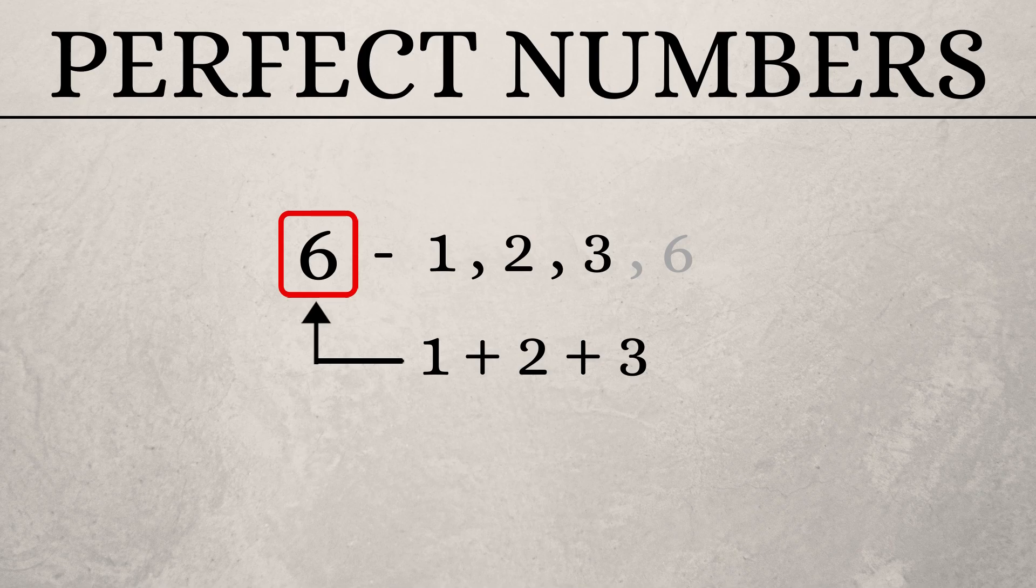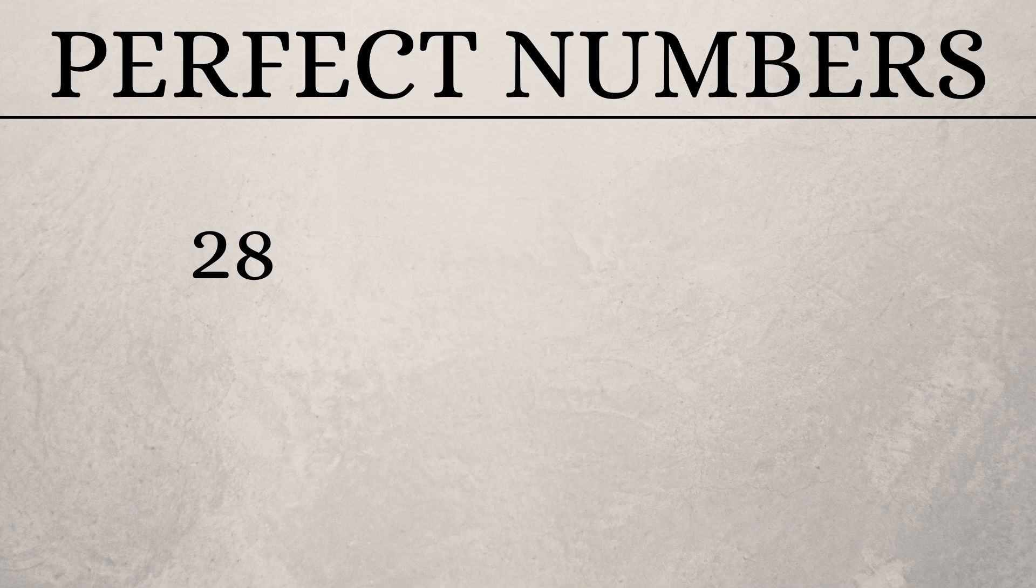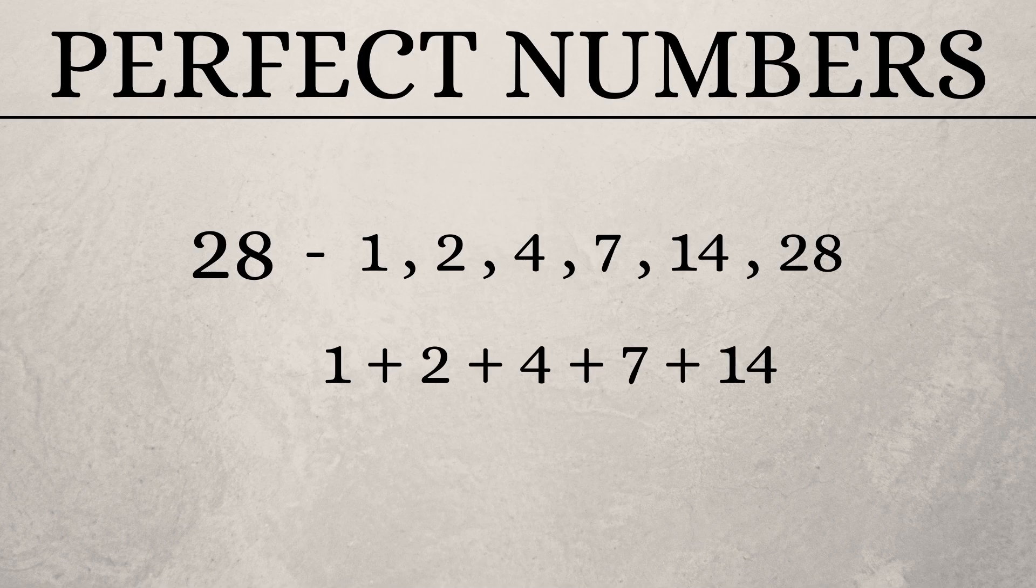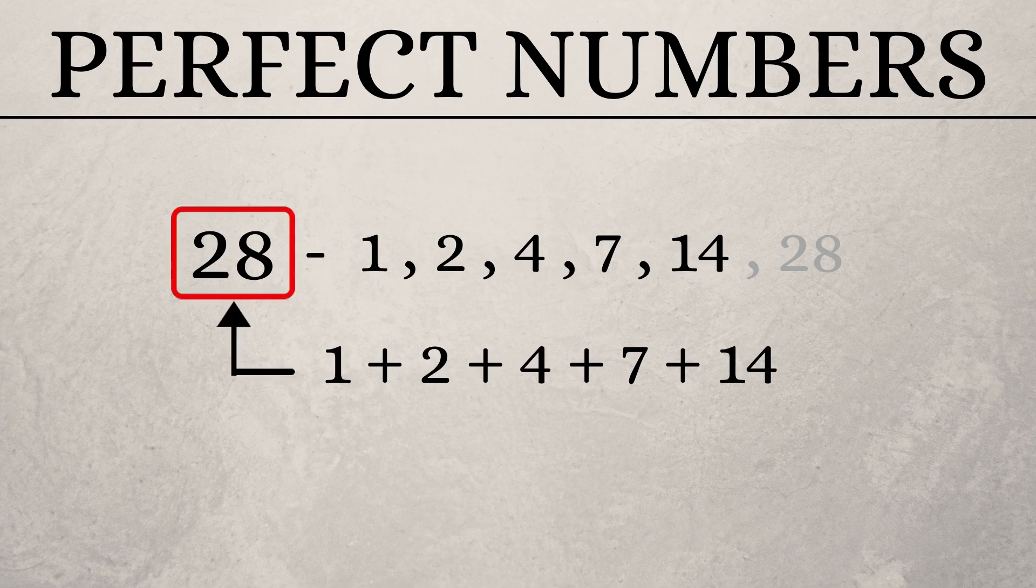Our next perfect number is 28. Listing down the factors, we have 1, 2, 4, 7, 14, and 28. Now, when we find out the sum of all the factors excluding 28, we get the original number 28. So, to generalize,